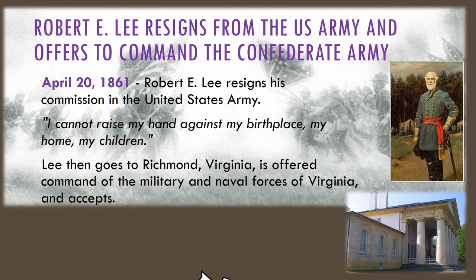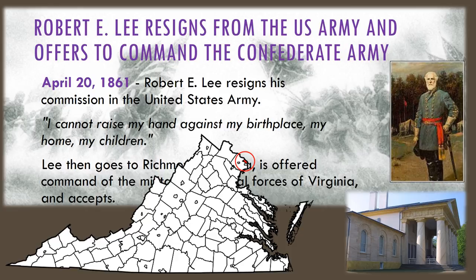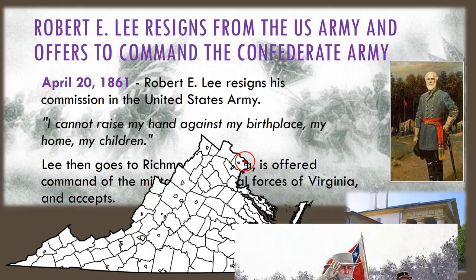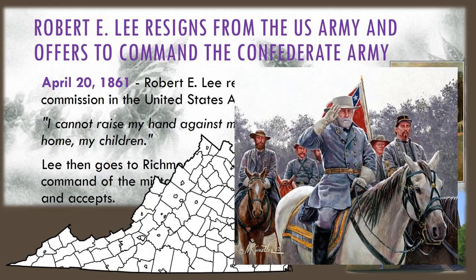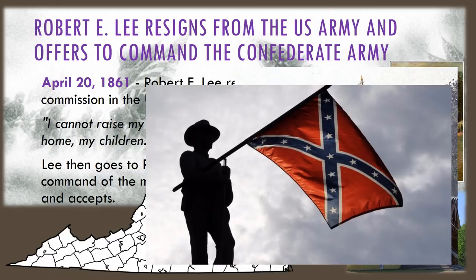Even though his home in Arlington overlooked Washington DC across the Potomac River, Robert E. Lee's heart is with Virginia. When Robert E. Lee learns that Virginia has seceded from the Union and will join the South, he resigns from the U.S. Army and offers to command the Confederate Army instead. On April 20, 1861, Robert E. Lee explains his reasoning: 'I cannot raise my hand against my birthplace, my home, my children.' Lee then goes to Richmond, Virginia and is offered command of the military and naval forces of Virginia and accepts.